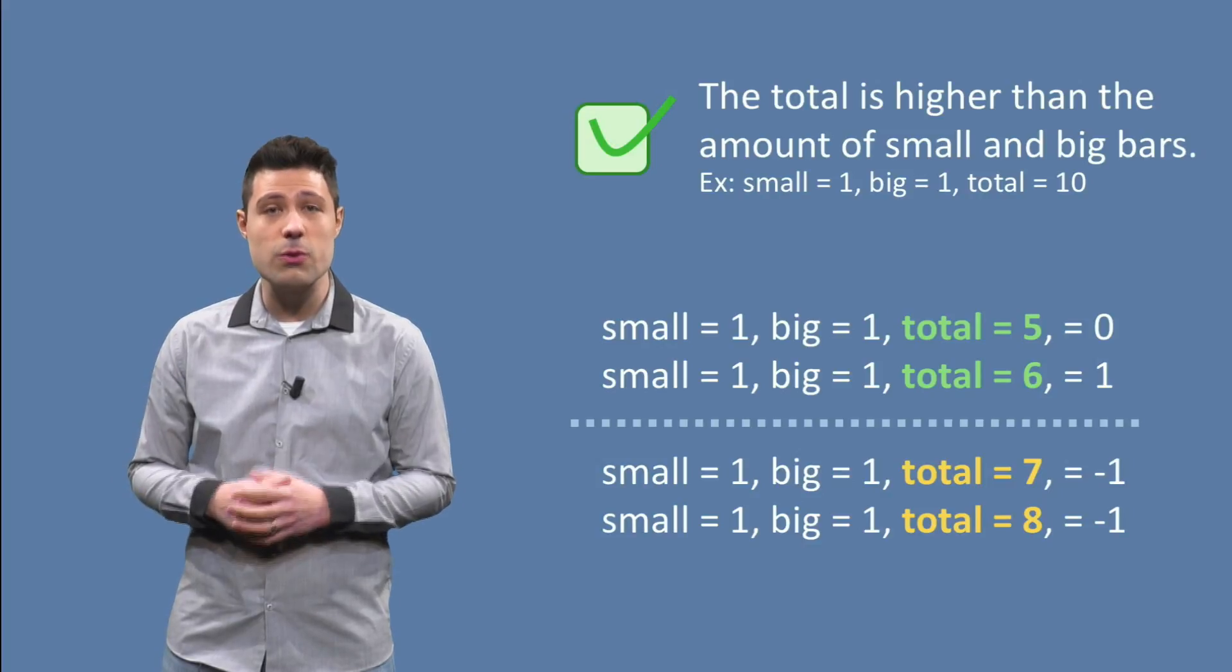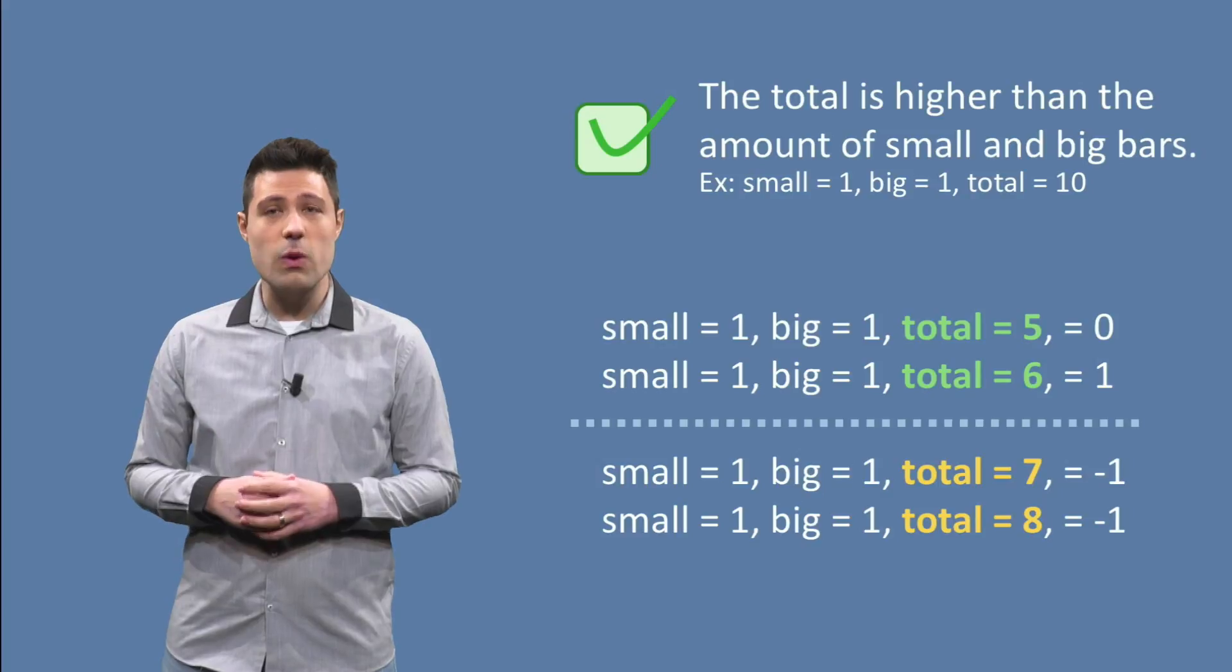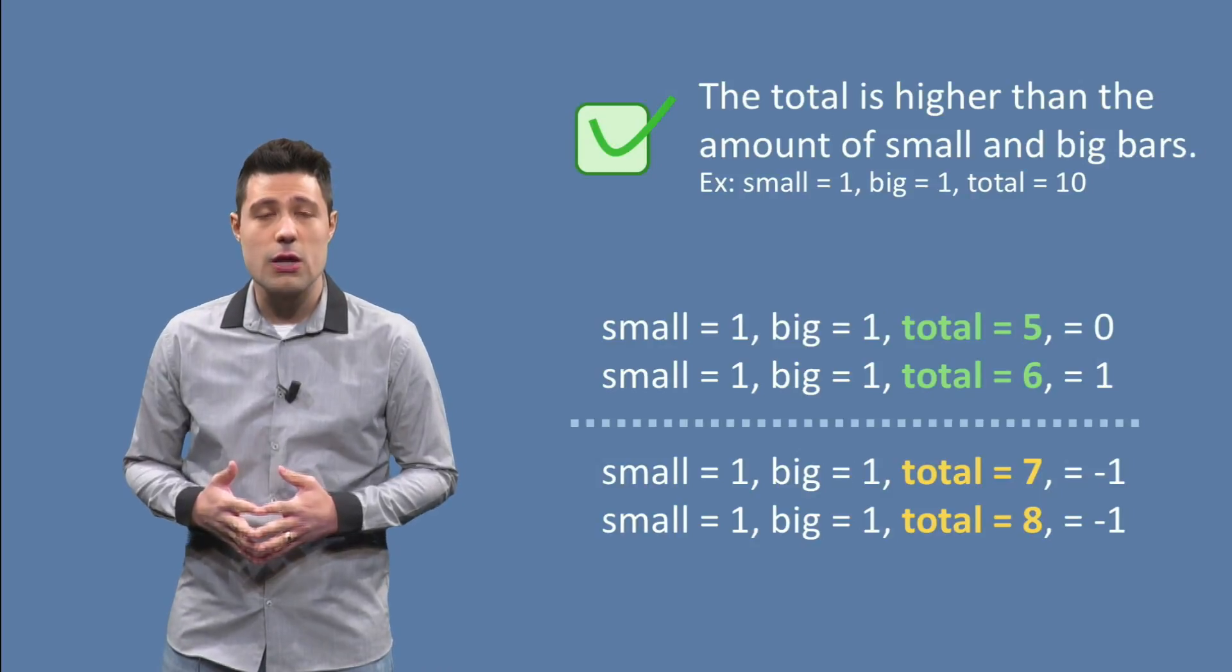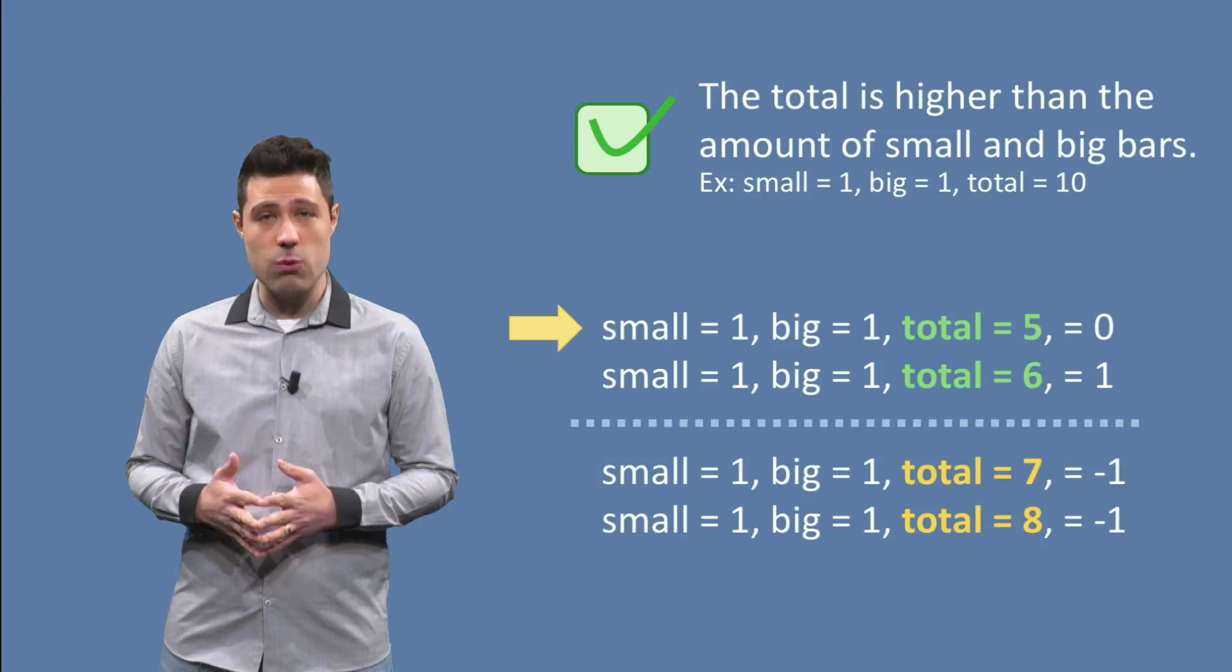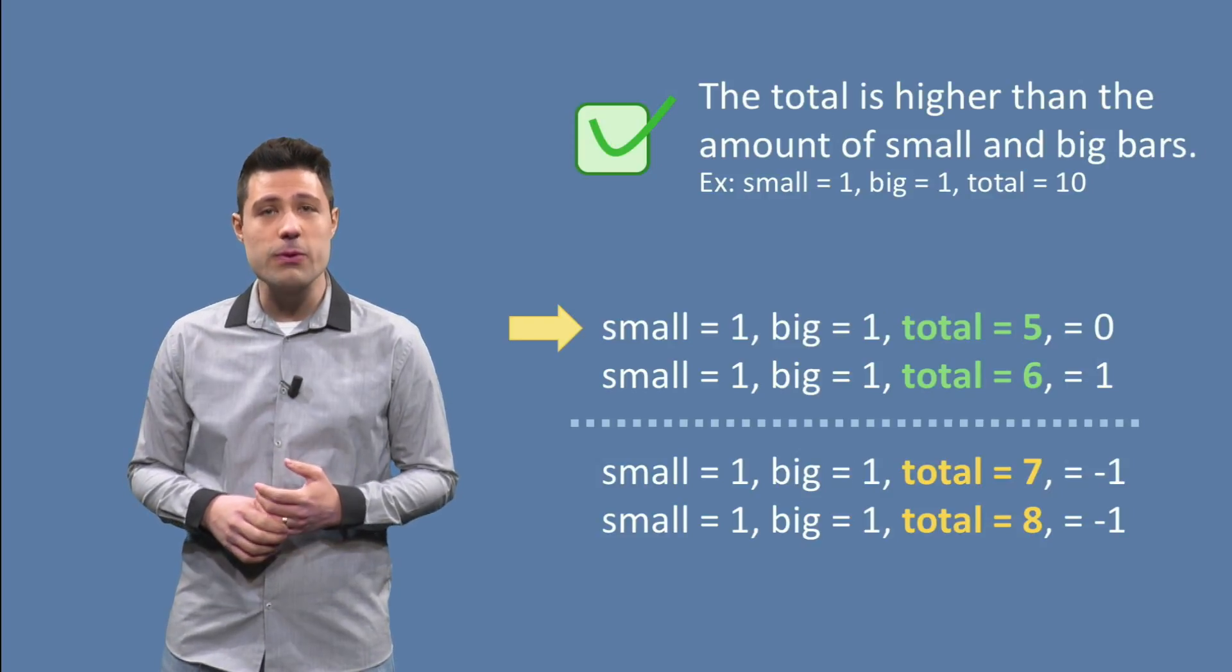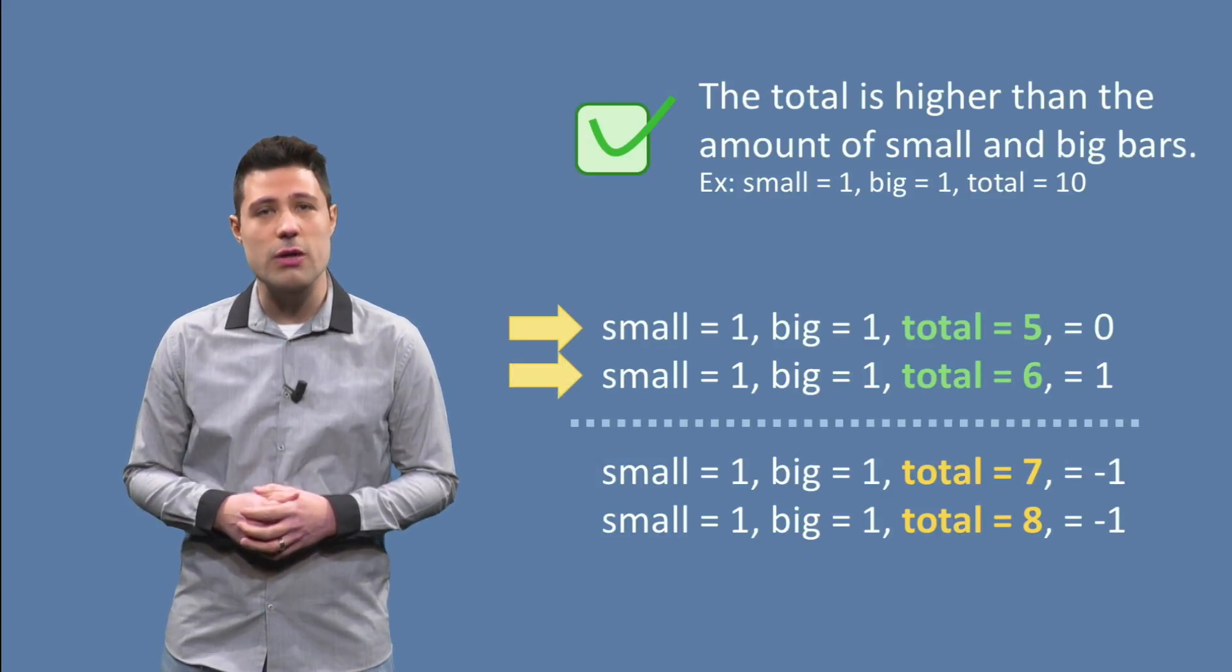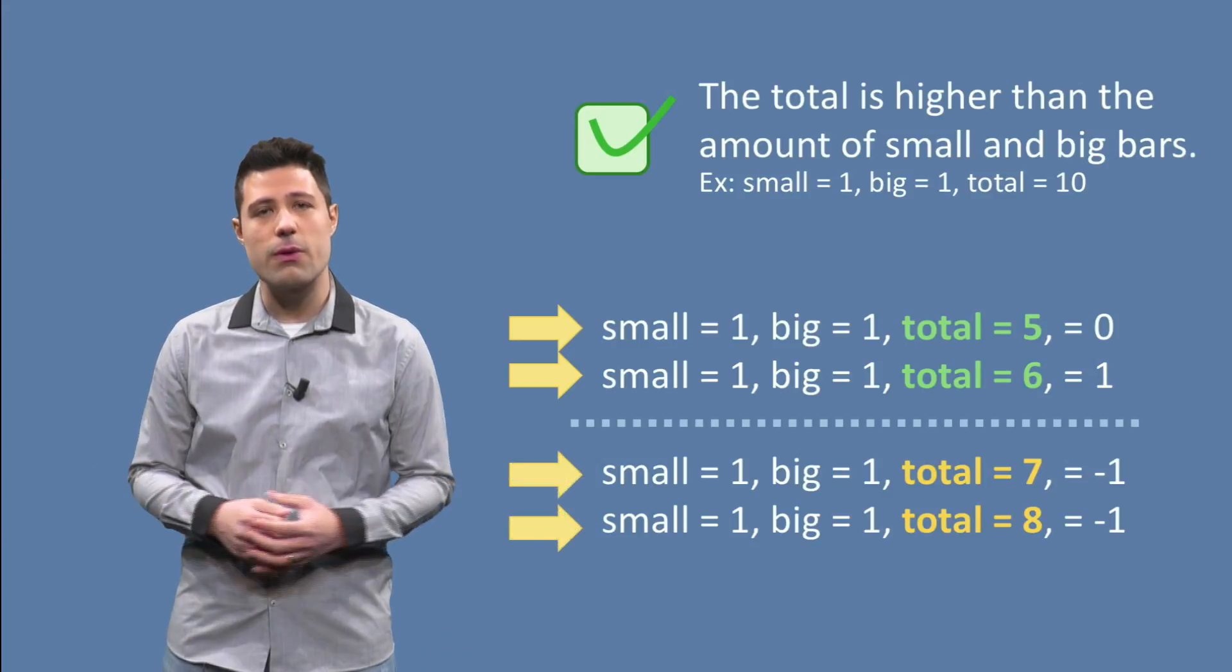Let's start with the total is just too big partition. What we are going to do is to write one automated test for each one of the four boundaries we thought of in the previous video. So, if we provide small equals 1, big equals 1 and total equals 5 as inputs, we expect the output to be 0. If we provide small equals 1, big equals 1, total equals 6, we expect the output to be 1. And so on and so forth.